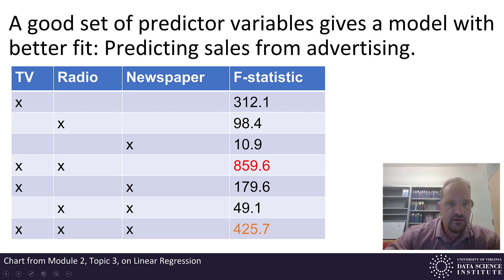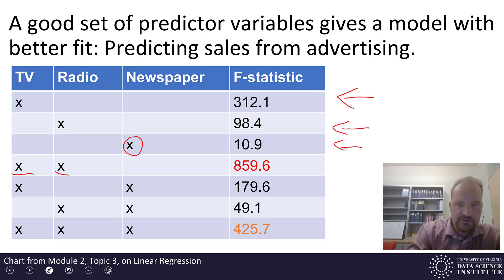Each row corresponds to a different model. That first row corresponds to a model that has just TV in it. The second row is a model with just radio, the next row is just newspaper. These X's tell us which different regressor variables are being used. The next row has TV and radio in it. In this column, the fourth column, we have the F statistic, and that is some measurement of how good of a fit we have relevant to the number of regressor variables. This is useful for comparing nested models, but it's not appropriate for comparing models that are not nested.